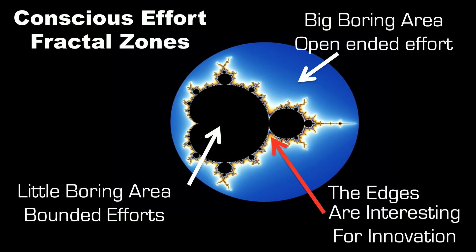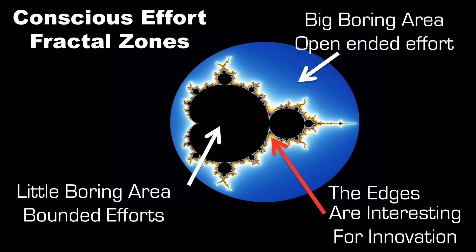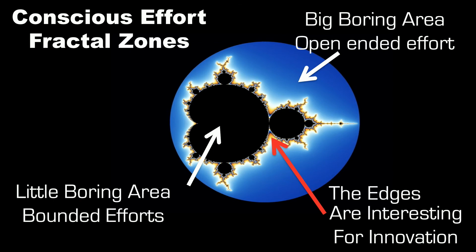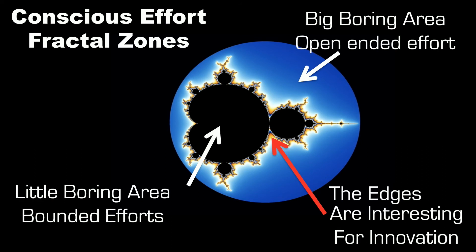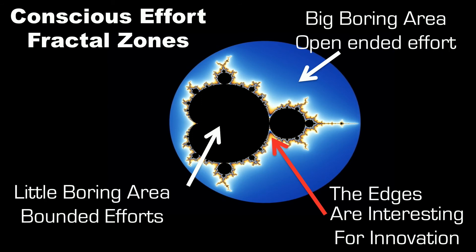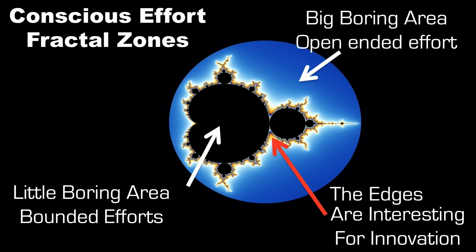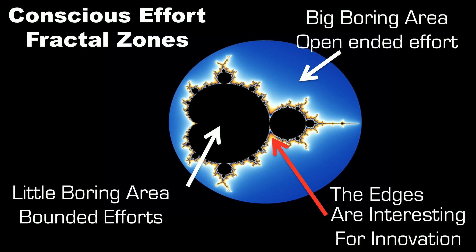We also need to look at what zone of this fractal space you are working in. Are you working in the big open-ended area where you don't know when the energy and action will collide? Or in the little bounded area where you know you have to succeed in a short period of time? When you look at industry work, they operate in this bounded area. But innovation is happening at the edges of these two zones — where, as we saw in the video, zooming in shows convergence happening. A lot of ideas emerge at those edges. That is the interesting part.